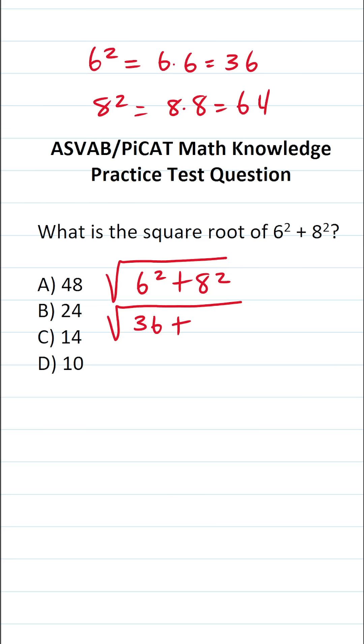So this becomes the square root of 36 plus 64. If you can't do this part mentally, always do it off to the side. 64 plus 36. 4 plus 6 is 10, so bring down a 0, carry a 1. 6 plus 3 is 9 plus 1 is 10.